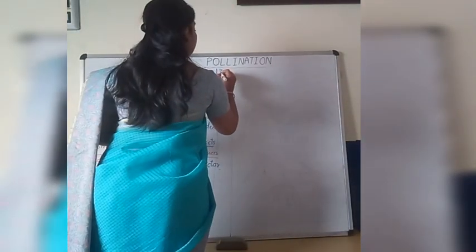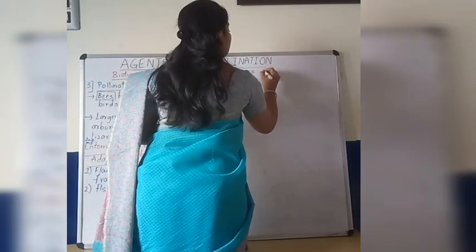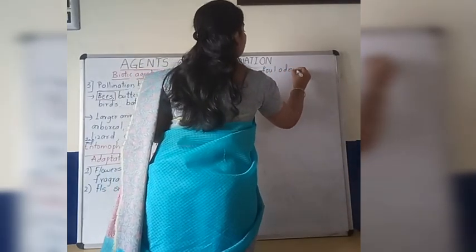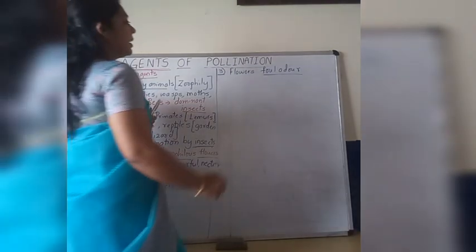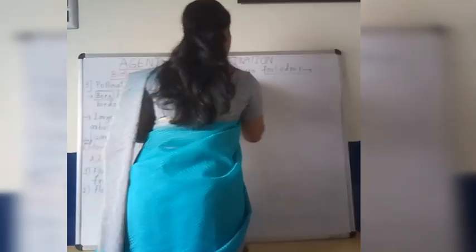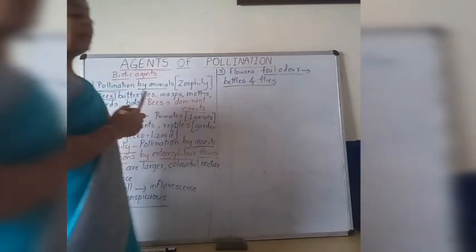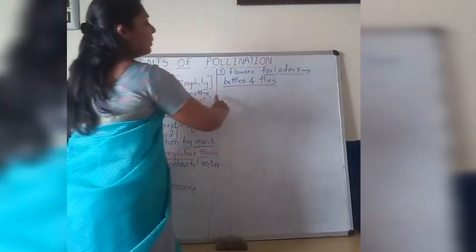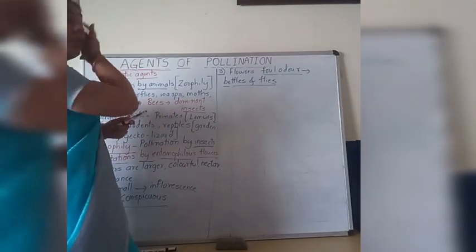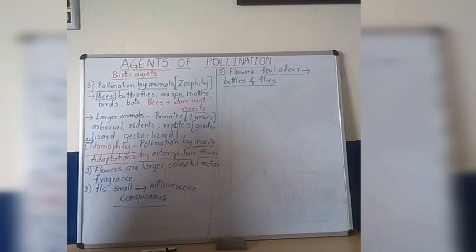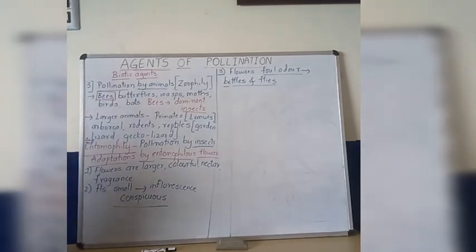Certain flowers have a foul odour — a very bad, rotting, dead-and-decaying smell. Such flowers are pollinated by beetles and flies, which get attracted to this foul odour. When beetles and flies visit these flowers, they lay their eggs or simply visit due to attraction to the odour, and in turn they help in pollination.